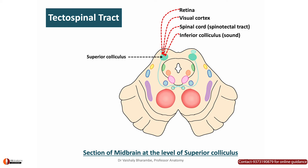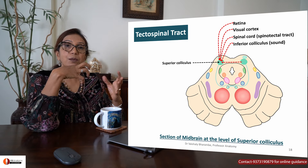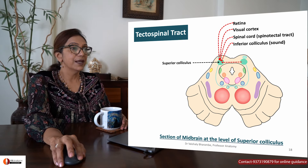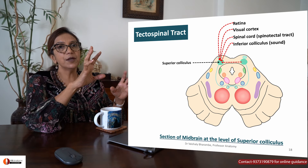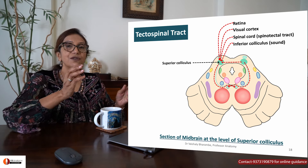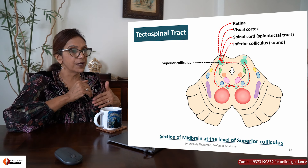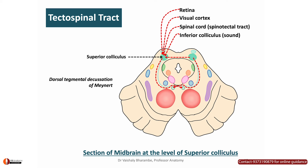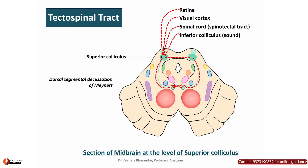So the superior colliculus is informed about hearing, vision, and spinal cord input. It analyzes all this and gives rise to fibers that go forward, cross, and descend down. This decussation is posterior to the decussation of the red nucleus and is called the dorsal tegmental decussation of Meynert — an MCQ point worth remembering. After decussation, it descends down as the tectospinal tract, carrying input from sensory, visual, and auditory centers.